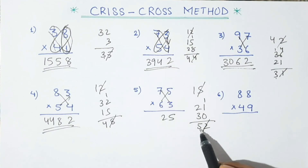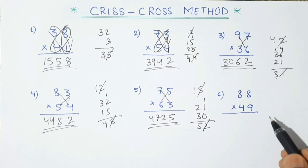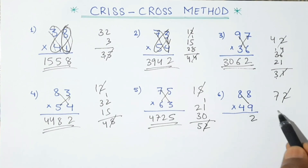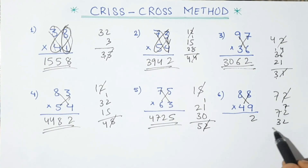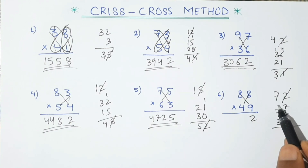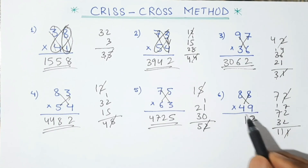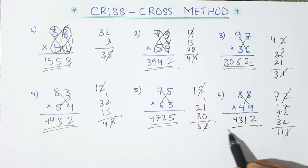Now 7×6 is 42, plus 5 is 47. So this is the product. For the next question, 8×9 is 72, write only 2 and carry 7. Cross multiplying: 8×9 is 72 and 8×4 is 32, plus carry 7 gives 111 — write 1 and carry 11. Then 8×4 is 32 plus 11 is 43. So this is the product of 88 and 49.